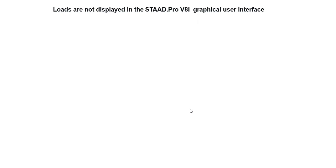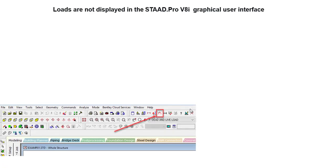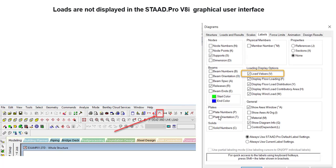While running the analysis, sometimes STAAD will not show you the load values, making it difficult to identify them. If you are using an older version, you just have to turn on the loading diagram tab in the view toolbar. If values are too small to visualize, right-click, go to Diagrams, and make sure the load value tab is checked.